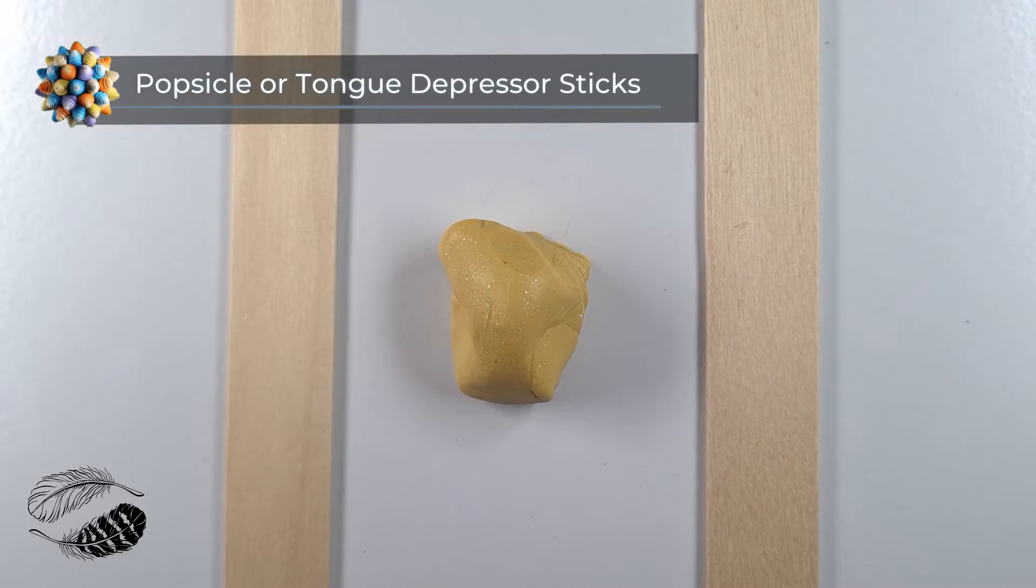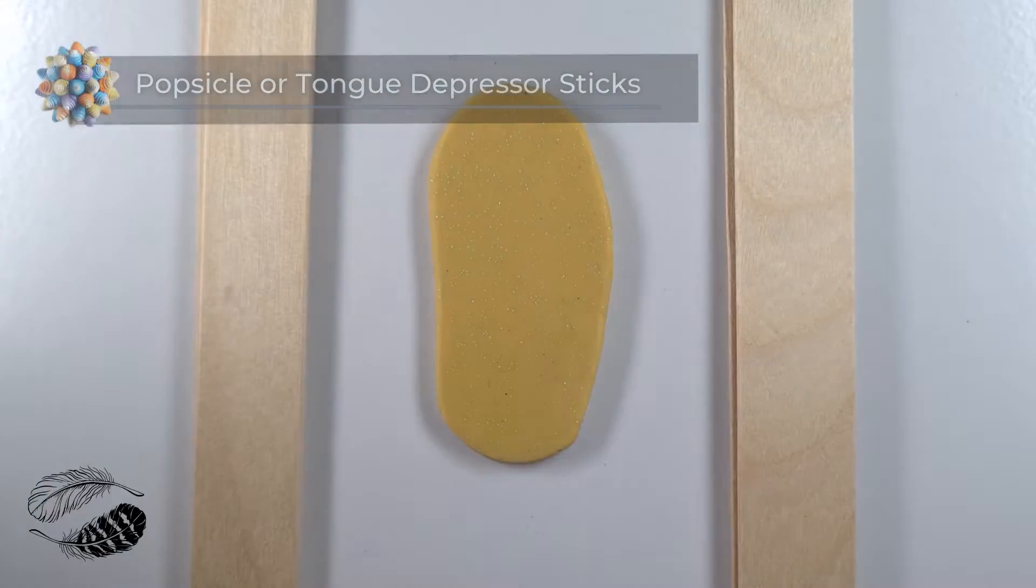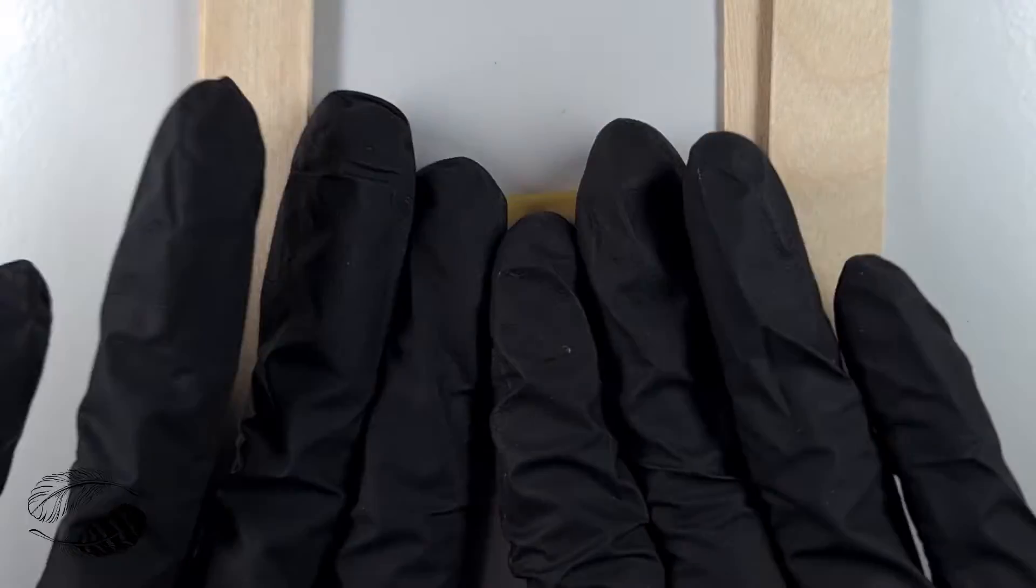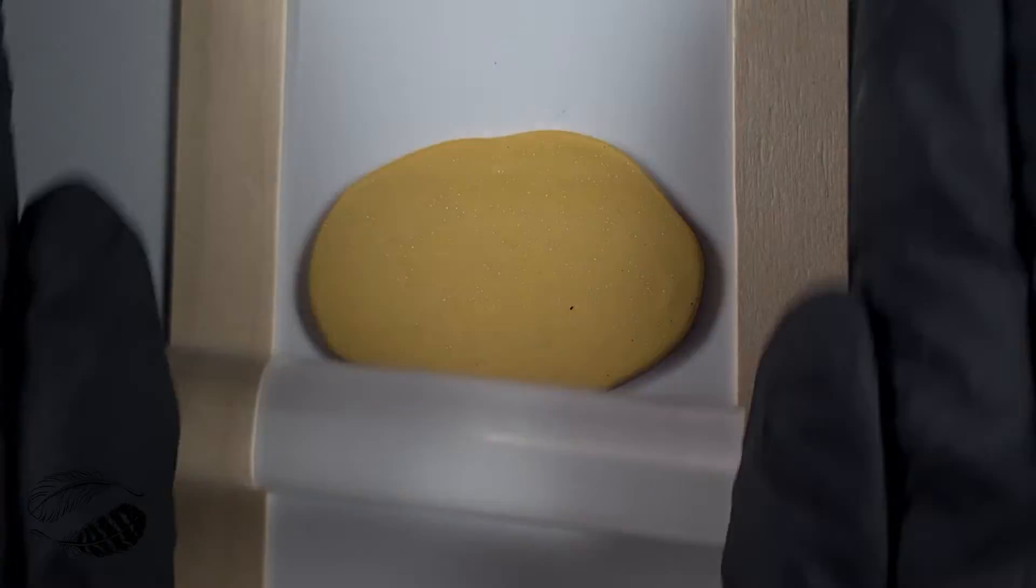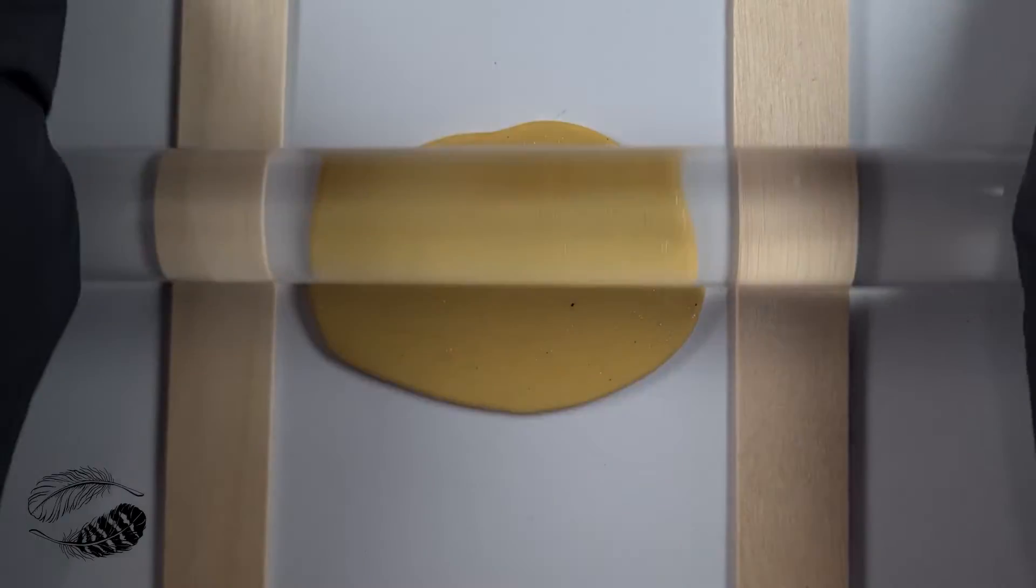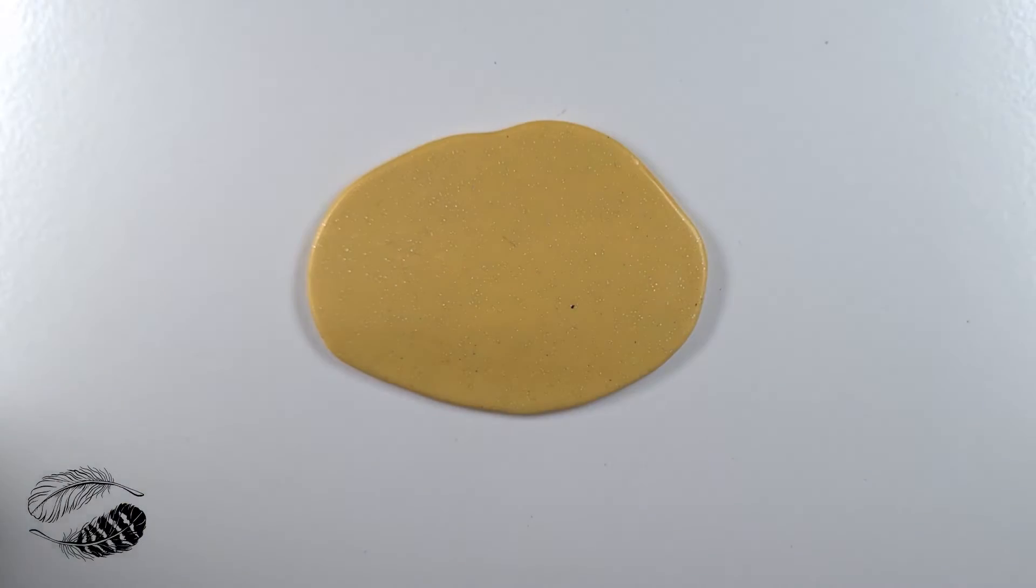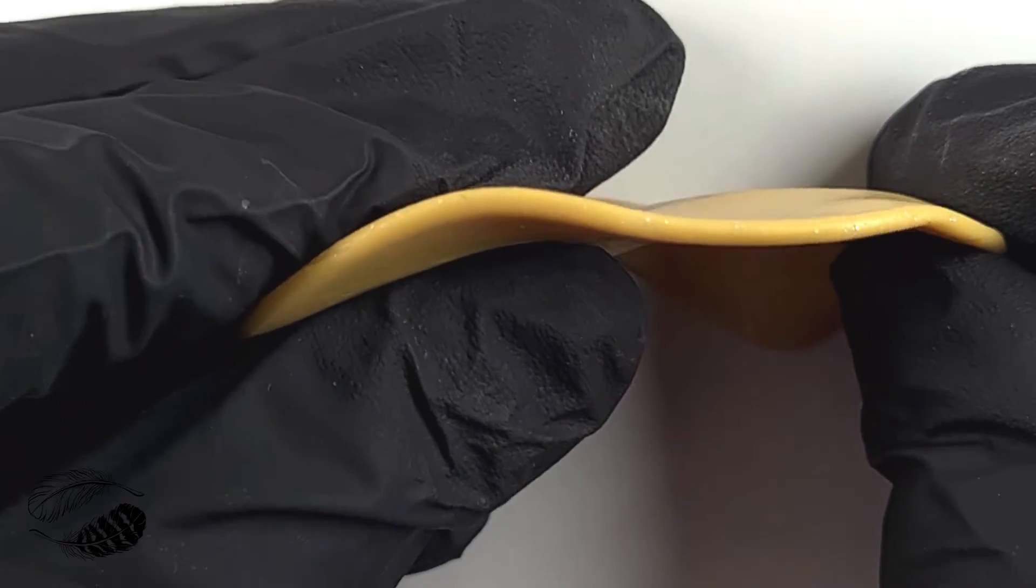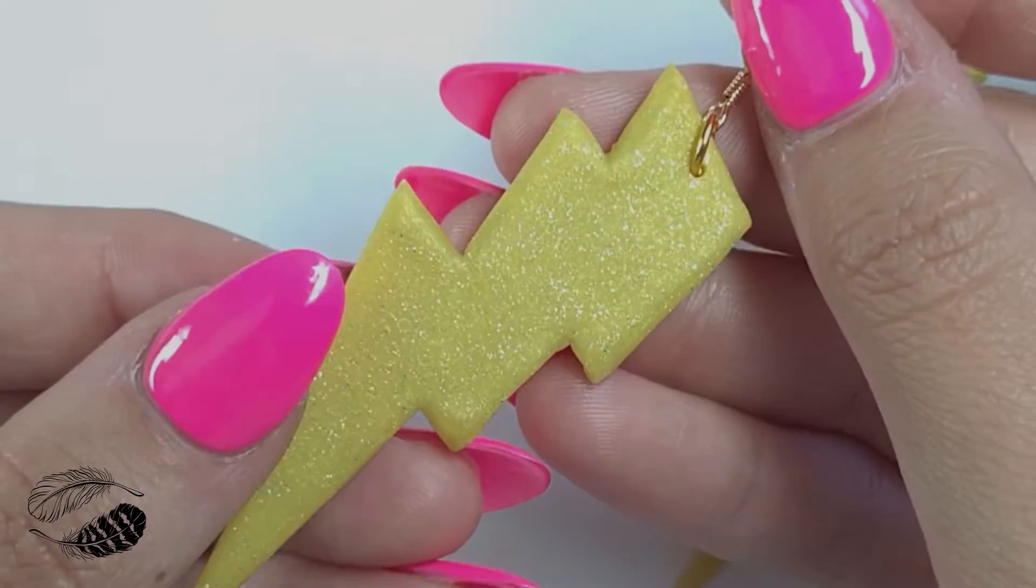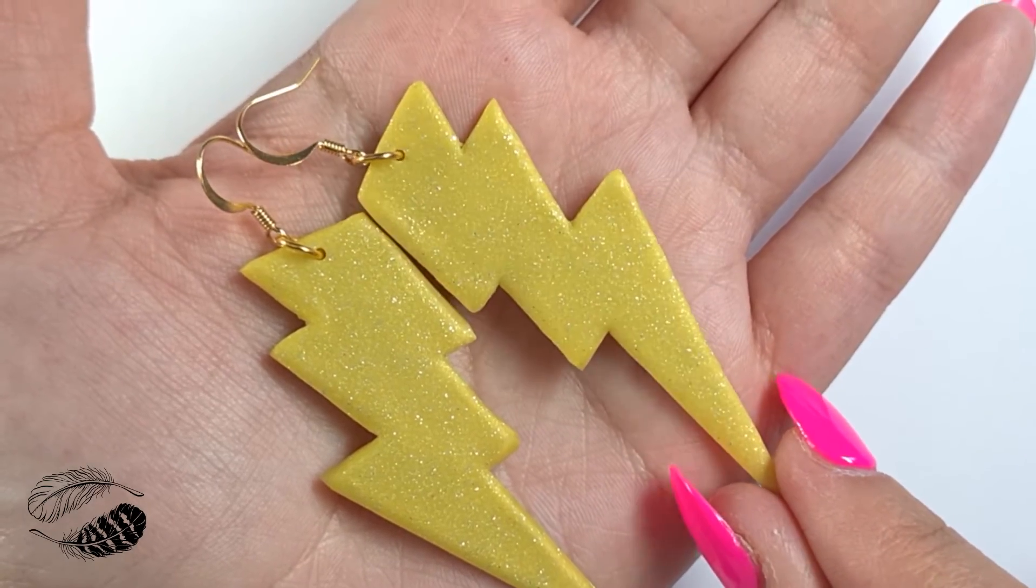Here I have some—well, you can use popsicle sticks. These are like tongue depressors that the dentist uses. You can adjust thickness by how high you stack the popsicle or tongue depressor sticks. Just make sure that you have the same amount on either side so that you get it nice and even. You can see it looks beautiful and this is a really great earring size. You can learn how to make these bolt earrings on my channel, just click on the link in the description below.